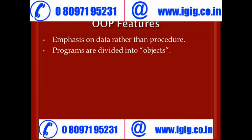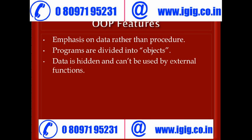यहां पर programs को functions में divide ना करके objects में divide किया जाता है. हमारा data एक critical part है. OOPS features में हम अपने data को hide कर सकते हैं, जिससे हमारा data external functions से use नहीं हो पाएगा.